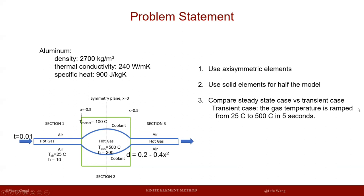For the transient case, the hot gas has a temperature change from 25 Celsius to 500 Celsius in five seconds, and we're going to see whether these two results match with each other.